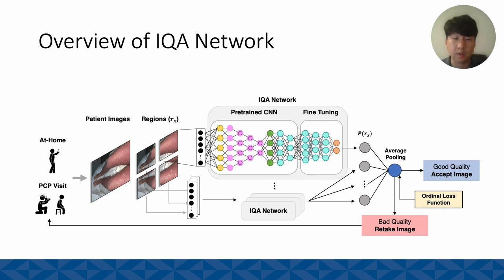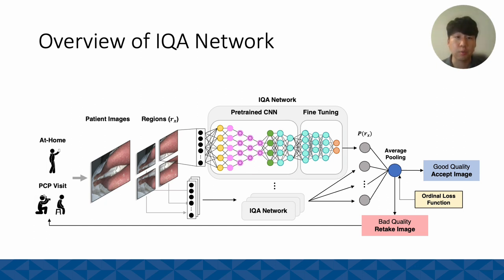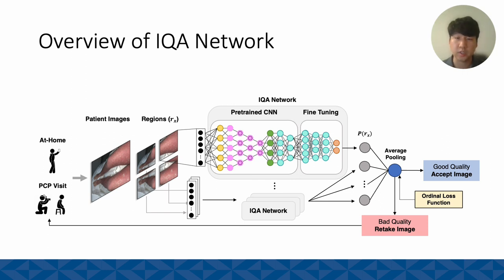This is an overview of the image quality assessment network. For this study, we only trained with patient-taken at-home images. We used a VGG-16 network, which has been popularly used for different tasks related to skin. We also compared performance between different models such as ResNet and Inception, and found that VGG showed the best performance. Once probabilities are calculated for each region based on multiple instance learning — by dividing the image into multiple patches — these predictions are aggregated through average pooling, and using ordinal loss functions, the model outputs a probability, and based on a threshold, accepts the image as good quality or rejects it as bad quality.